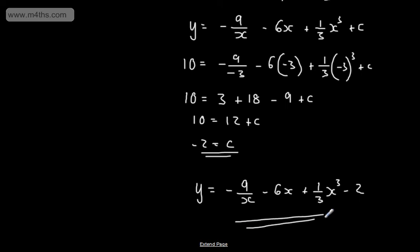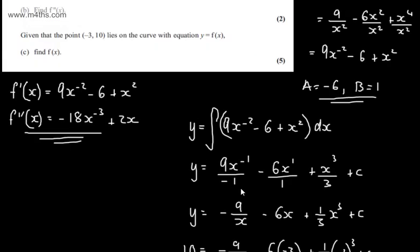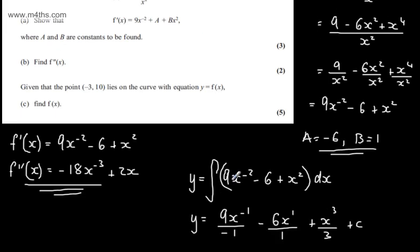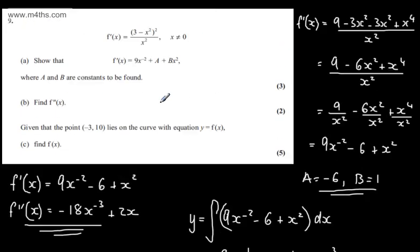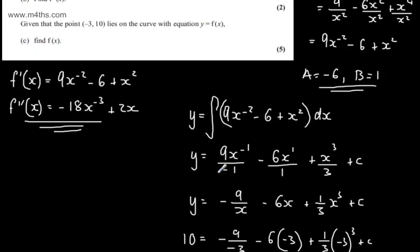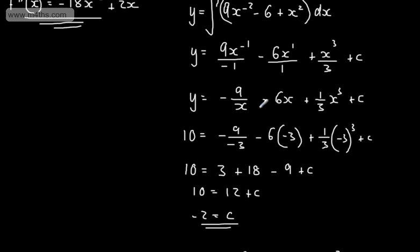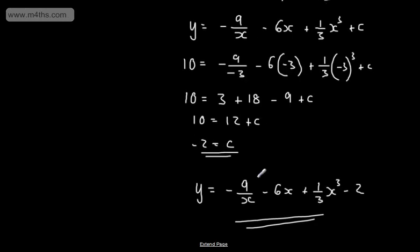As stated before, you can also write that as minus 9x to the minus 1. That's five marks in total for integrating the derivative, finding y in terms of x with the constant of integration, substituting in the values to find c, and finally writing the final equation.